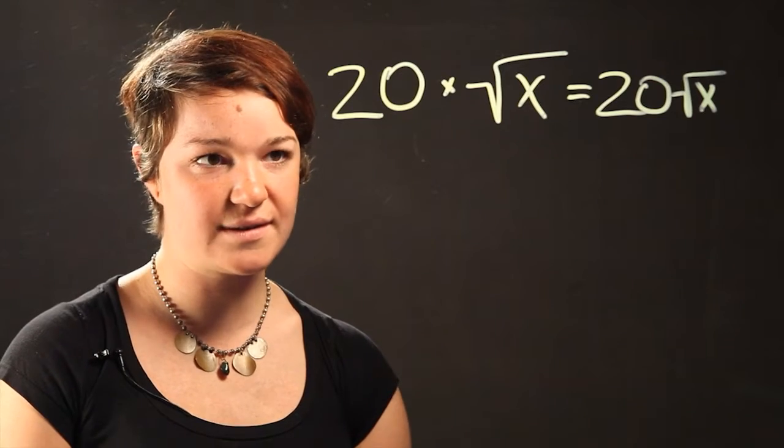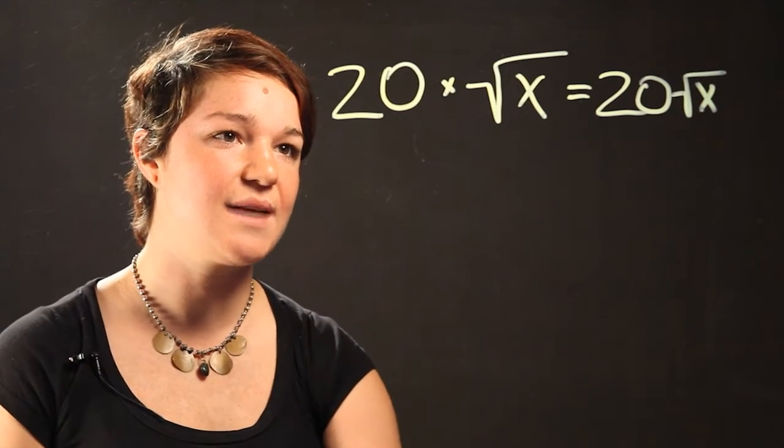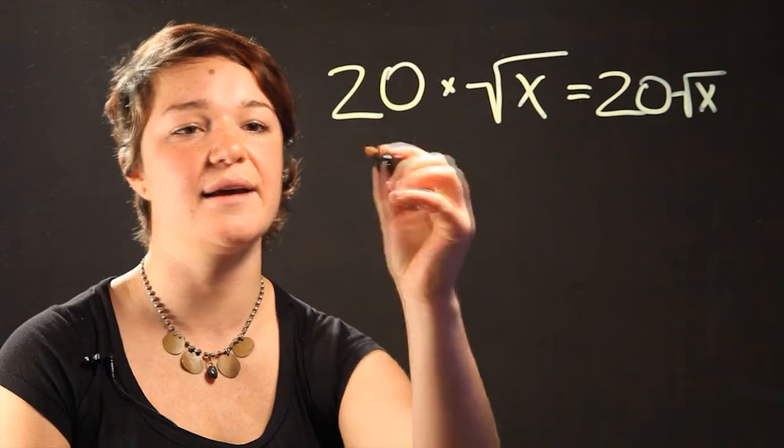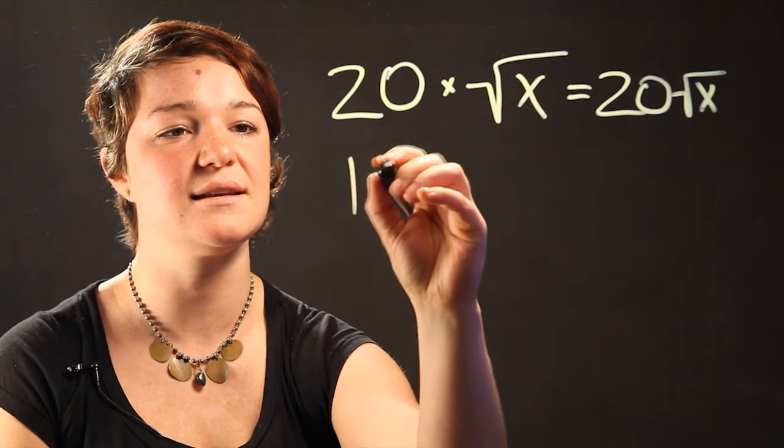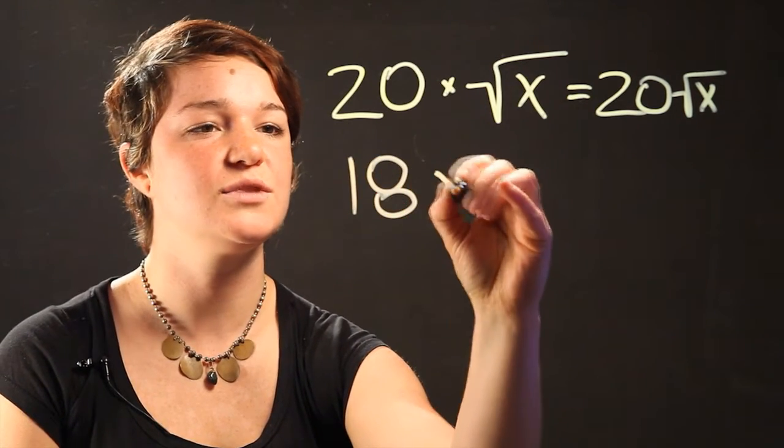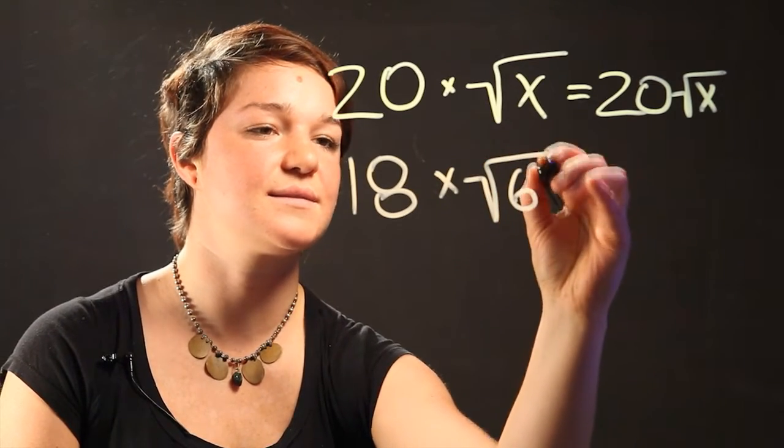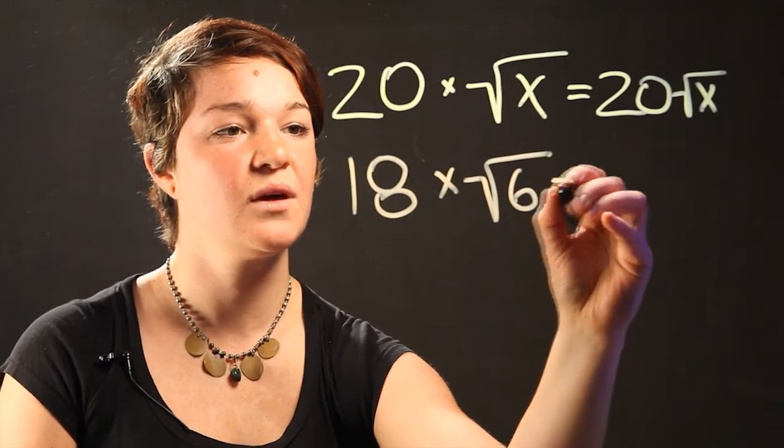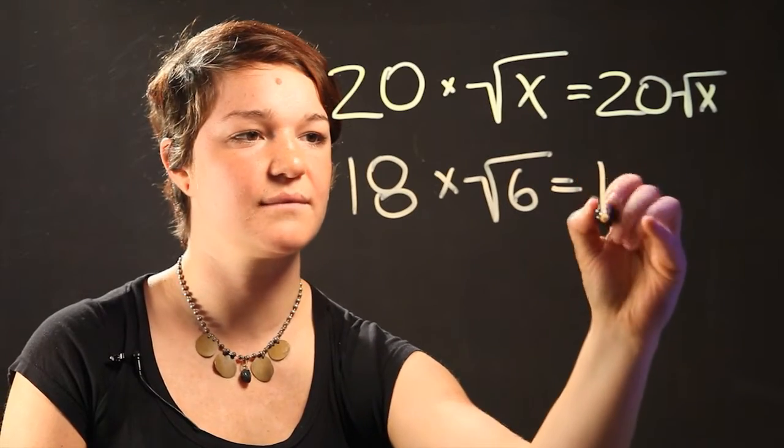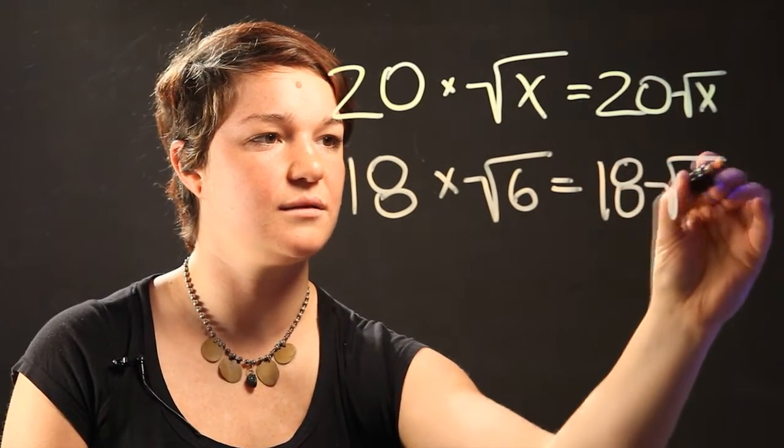So let's do another example. Let's say we want to multiply a number such as 18 multiplied by the radical of 6. Once again, you just do the same thing. It's 18 radical 6.